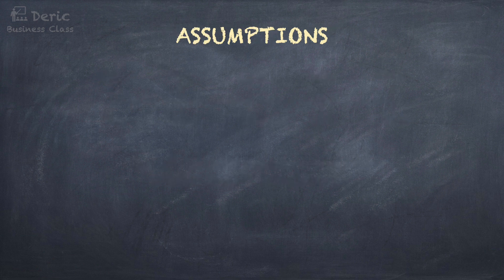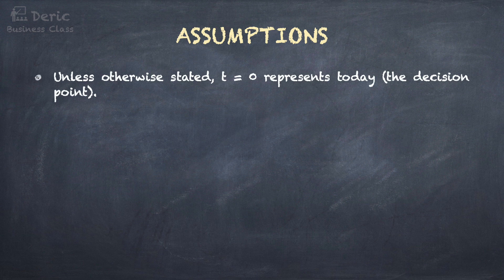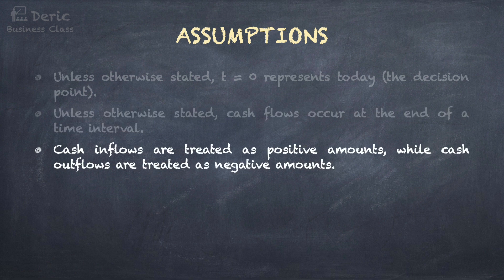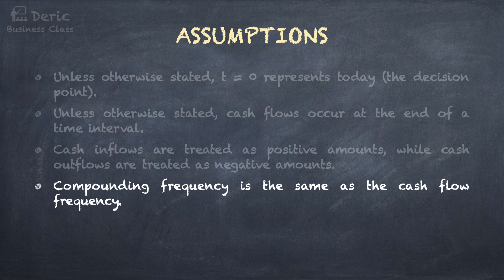For applying this, there are some assumptions. First, unless otherwise stated, T equals zero represents today — this is a decision point. Second, unless otherwise stated, cash flows occur at the end of a time interval. Third, cash inflows are treated as positive amounts, while cash outflows are treated as negative amounts. Fourth, compounding frequency is the same as the cash flow frequency. Compounding frequency could be annually, semi-annually, quarterly, monthly, weekly, or daily.